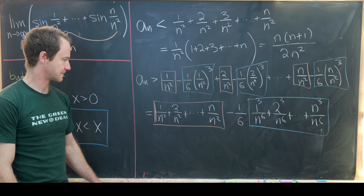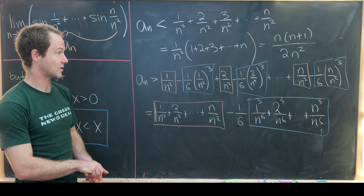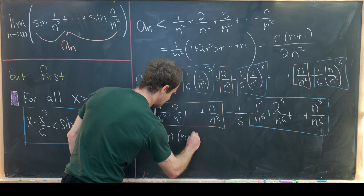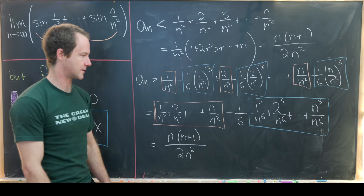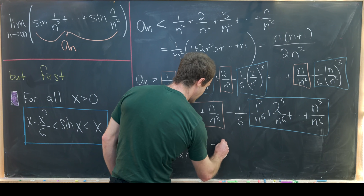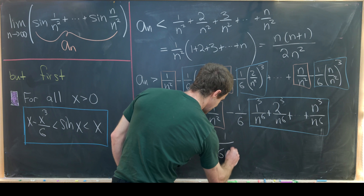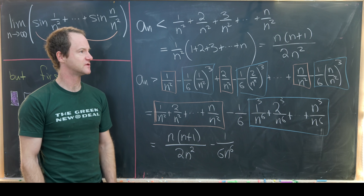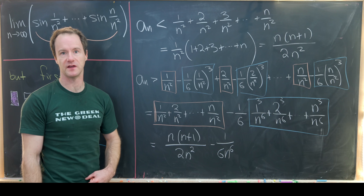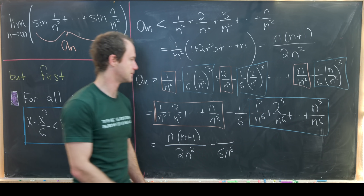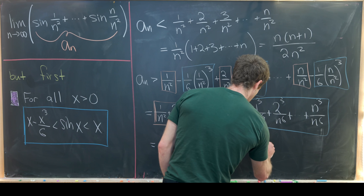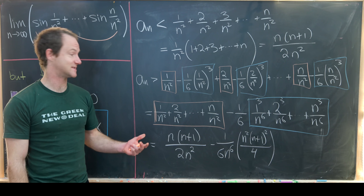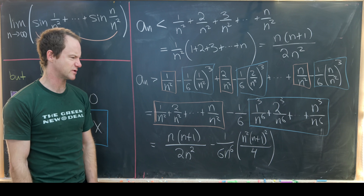The orange sum is exactly what we computed before: n times n plus 1 over 2n squared. For the blue sum, we use the well-known formula for the sum of the first n cubes: n squared times n plus 1 squared over 4. Interestingly, the sum of the first n cubes equals the square of the sum of the first n natural numbers. So the lower bound becomes n times n plus 1 over 2n squared minus 1 over 6n to the 6 times n squared times n plus 1 squared over 4.